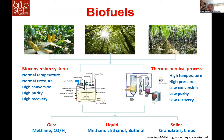Various feedstocks can be used as starting material. Historically, corn and sugarcane, and second generation using plant biomass like grass and wood. There are two routes: bioconversion, which I prefer, and thermochemical process. Bioconversion is considered more environmentally friendly because it involves normal temperature and pressure and usually has high conversion, high purity product, and higher recovery of the product. The thermochemical process involves high temperature, high pressure, and can be very polluting.